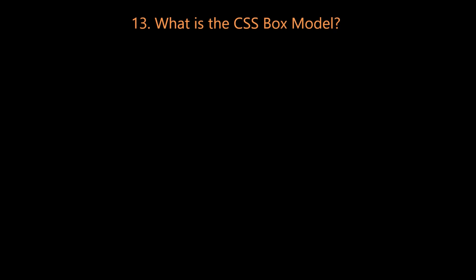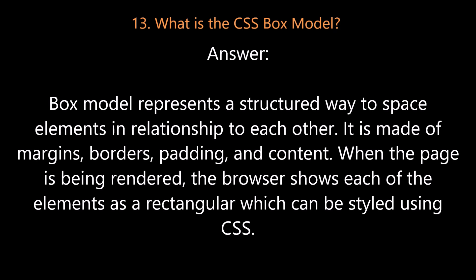Question number thirteen: What is the CSS box model? The box model represents a structured way to space elements in relationship to each other. It is made of margins, borders, padding, and content. When the page is being rendered, the browser shows each of the elements as rectangular, which can be styled using CSS.